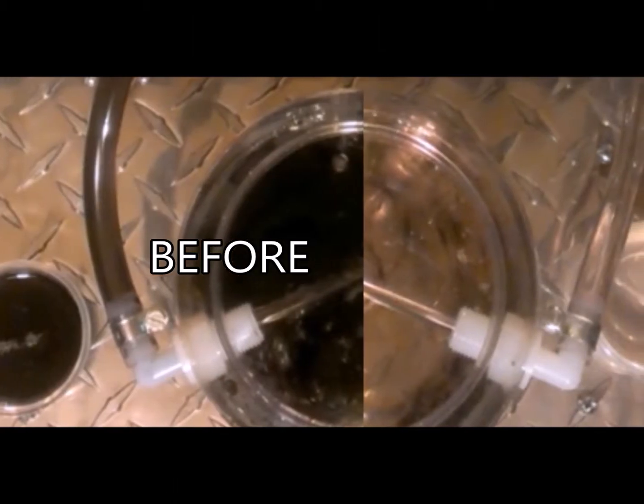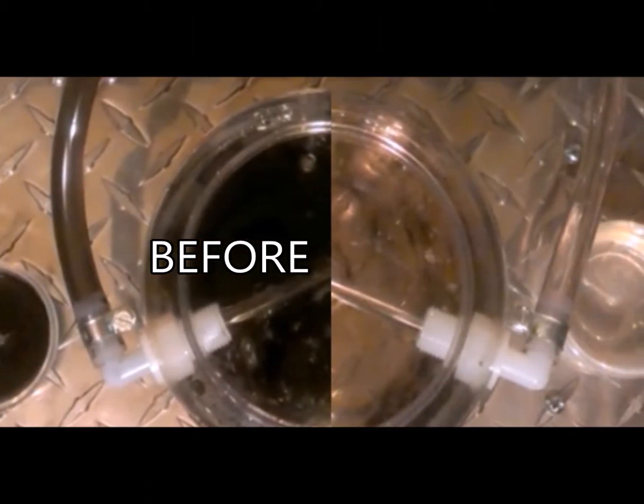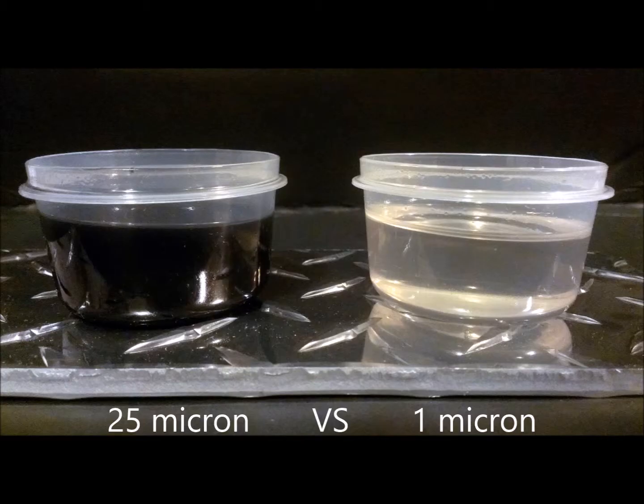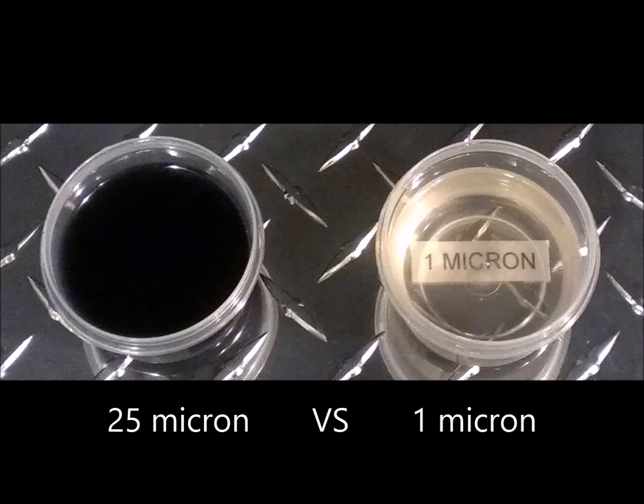This is your oil before, and this is your oil after, running our purifier. 25 micron versus 1 micron in a single pass, removing all particles down to 1 micron absolute. Now, which oil do you want running through your equipment?